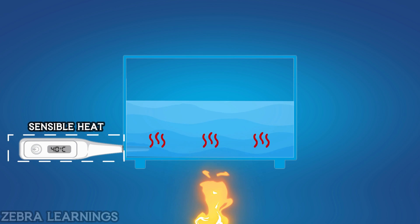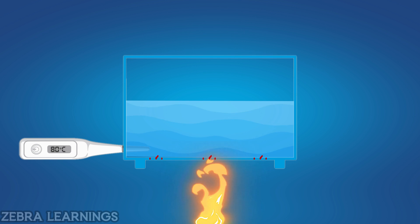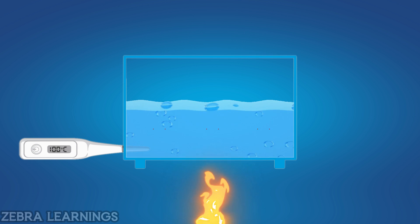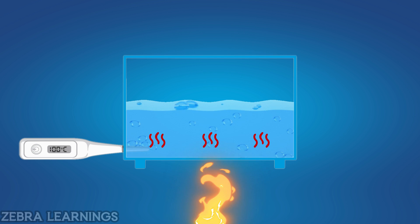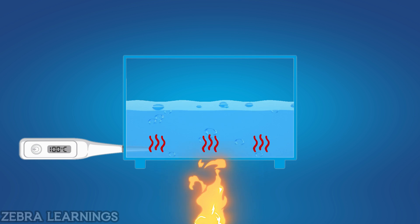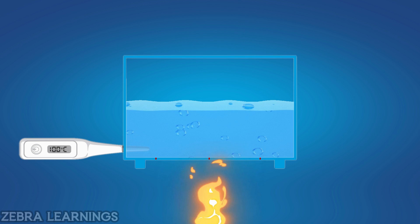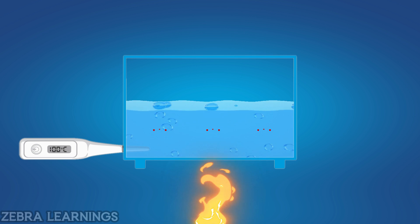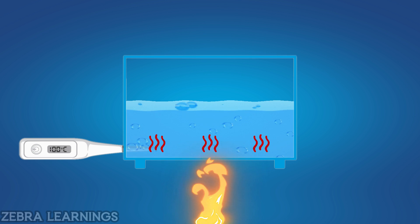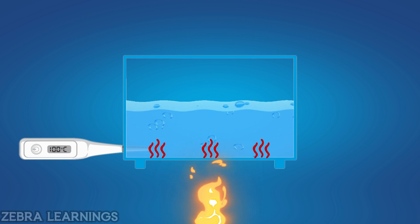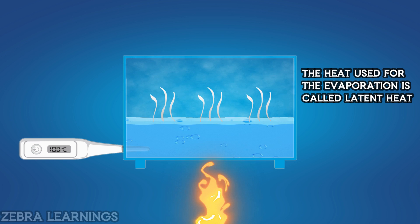If we continuously heat the water, its temperature will increase and reach 100 degrees Celsius. However, after reaching 100 degrees Celsius, the water temperature will not increase further. Even after reaching 100 degrees Celsius, the heat we apply will be used to convert the water from a liquid state to a vapor state. This heat required for evaporation is called latent heat.